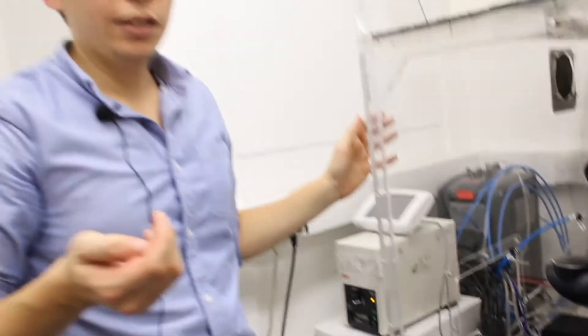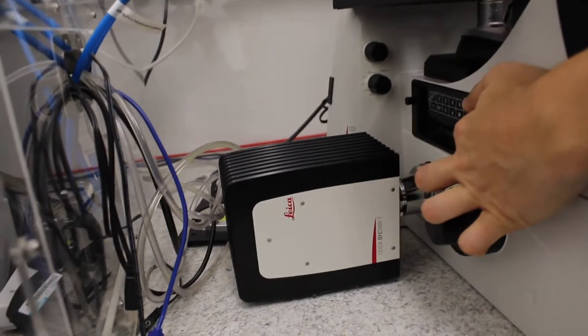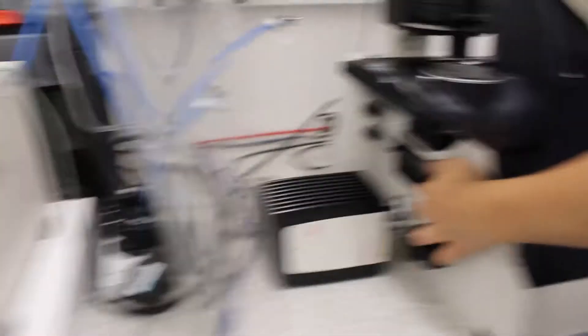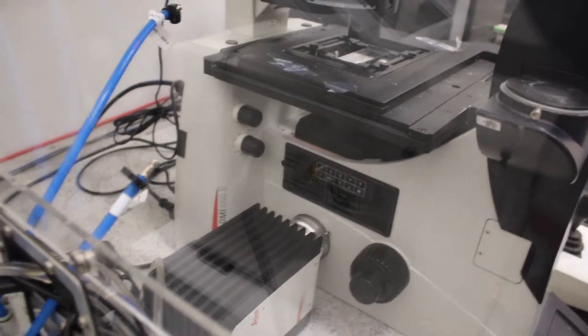Then you need to choose which filter cube you want to use depending on the sample that you want to see the fluorescence of. It's on this filter wheel and you have to choose the number, the position that you want to have the correct filter cube.